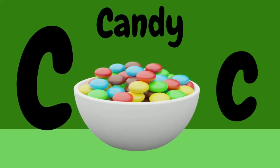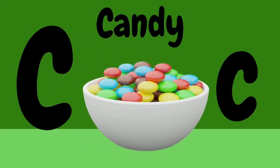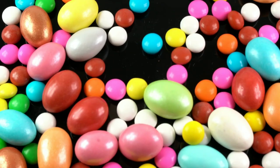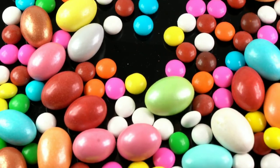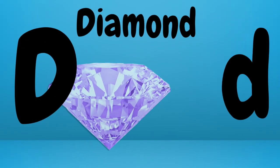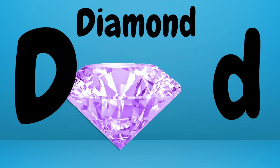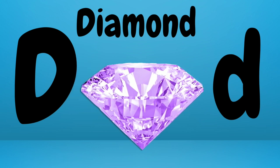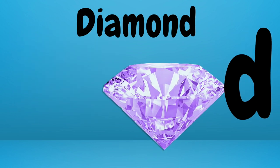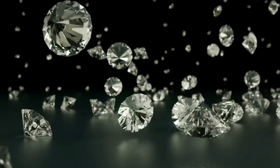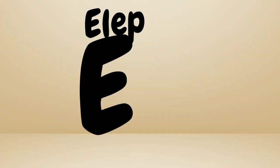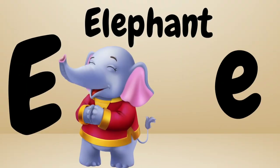C is for candy. Candy. Candy. This is a candy. Candy. D is for diamond. Diamond, diamond. This is a diamond. Diamond.